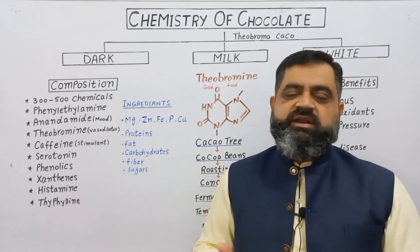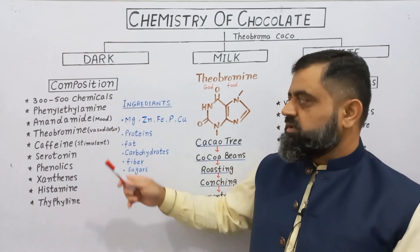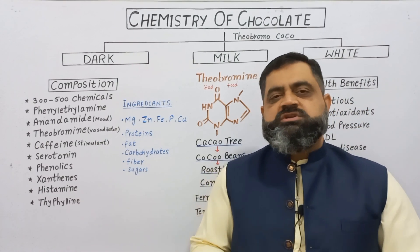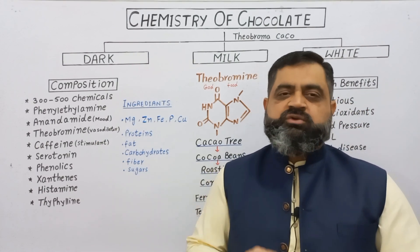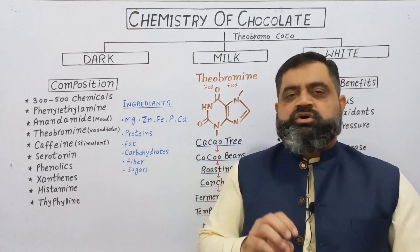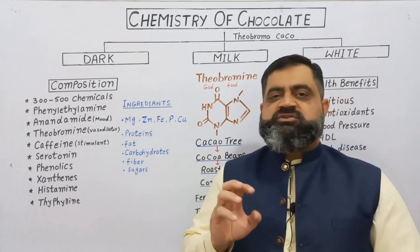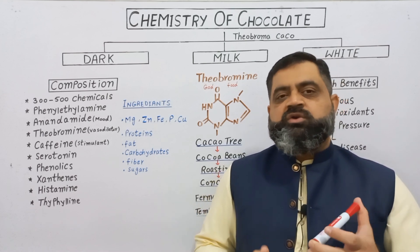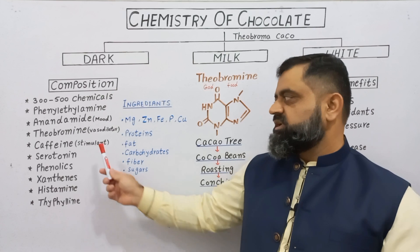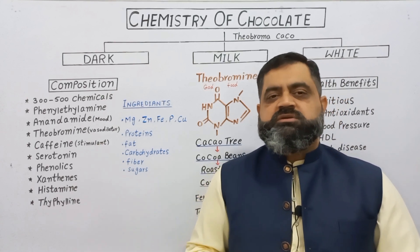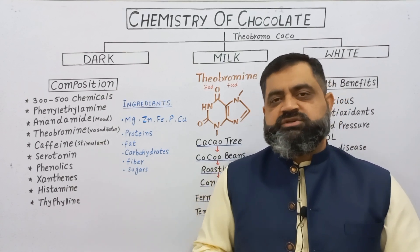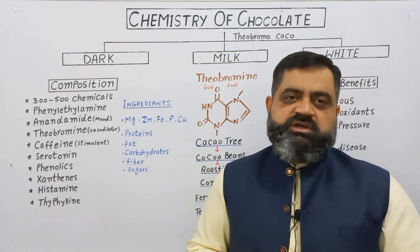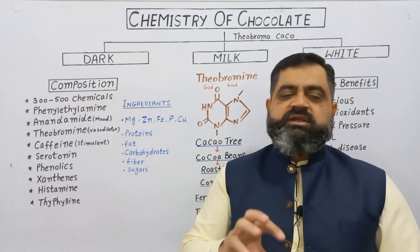Another chemical is anandamide, which is also a mood enhancer. Theobromine is a vasodilator and also lowers blood pressure. Caffeine is a stimulant. All these chemicals are known as alkaloids. Too much of these alkaloids can cause poisonous effects, but a moderate amount is good for your health. Caffeine increases metabolism, heartbeat, and blood pressure, and also balances neurotransmitters in our body to help maintain mental health.